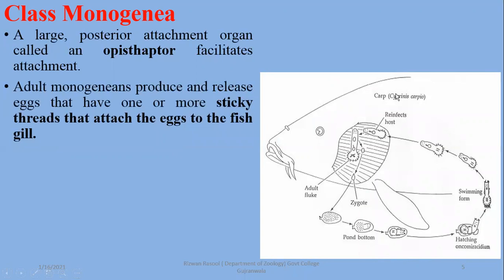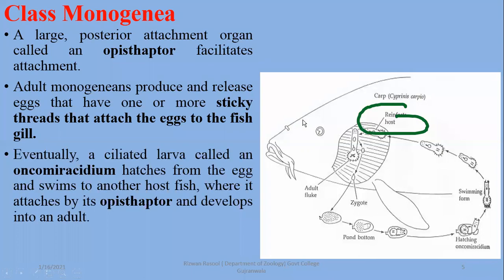Adult monogeneans produce and release eggs that have one or more sticky threads that attach the eggs to the fish gill. The fish gills become infected, and the free-swimming larval stage is known as the Onchomiracidium. A ciliated larva called the Onchomiracidium hatches from the egg and swims to the host fish.